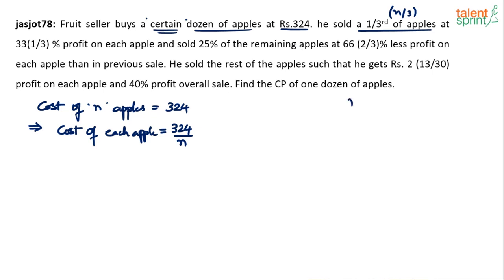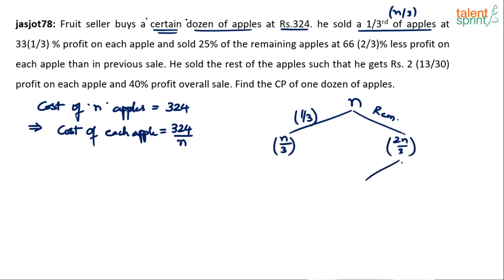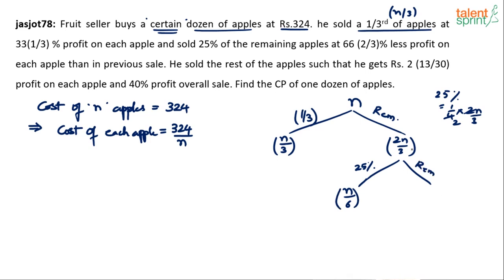There are total n apples being sold in different parts. First, he sold one third — that is n/3 apples. What is remaining? Two-thirds is remaining, which is 2n/3. Now he sold 25 percent of these remaining apples. 25 percent equals one-fourth, so one-fourth of 2n/3 is n/6. So he sold n/6 apples in the second sale. What remains now? Remaining will be n minus n/3 minus n/6.